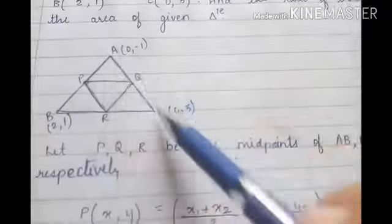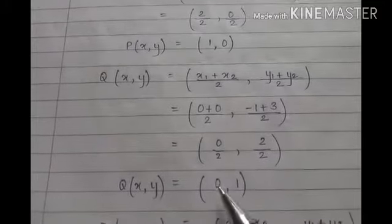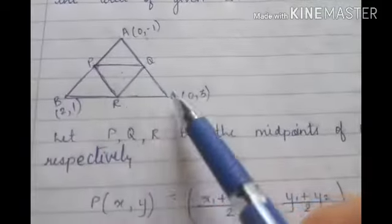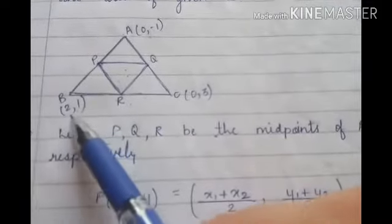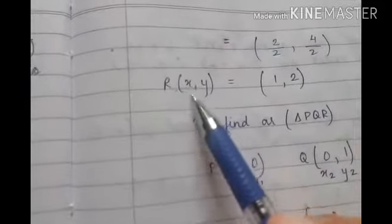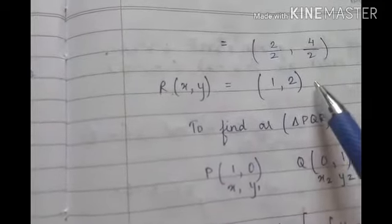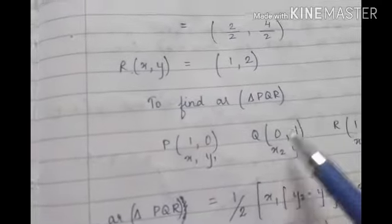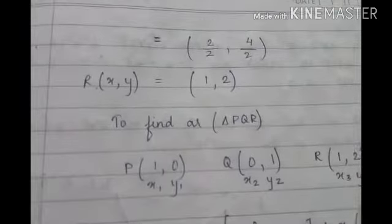Similarly, Q is the midpoint of AC. Substituting the coordinates of A and C as (x1, y1) and (x2, y2), we get Q = (0, 1). Next, R is the midpoint of BC. Substituting the coordinates of B and C, we get R = (1, 2). So now we have P(1, 0), Q(0, 1), and R(1, 2) as the coordinates of the vertices of triangle PQR.